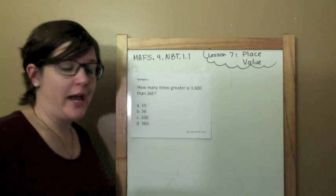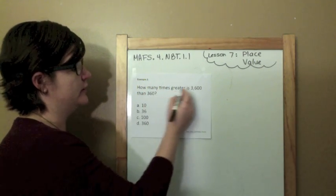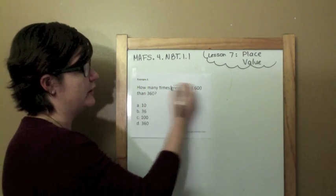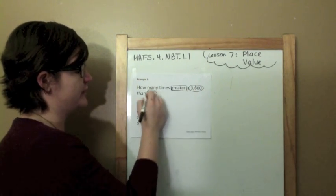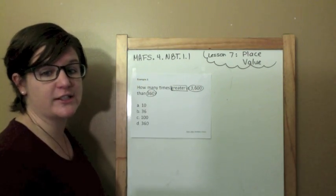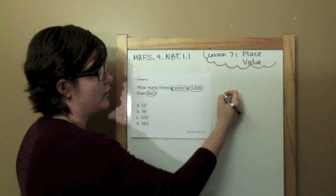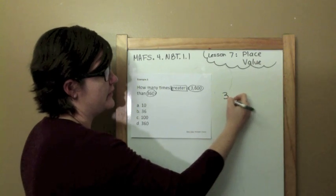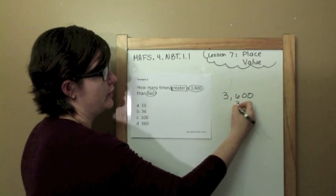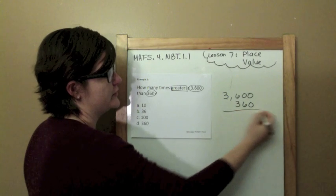Example two: how many times greater is 3,600 than 360? So let's line them up to see. We've got 3,600 and we've got 360.